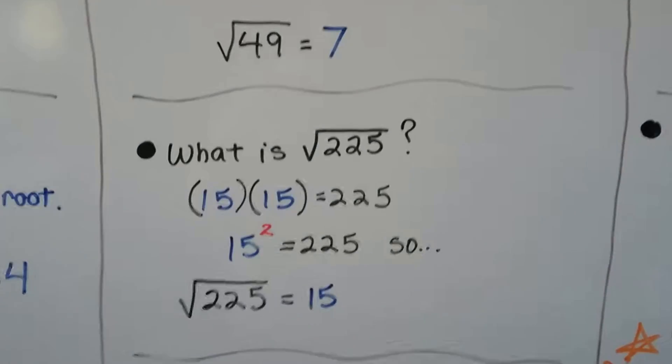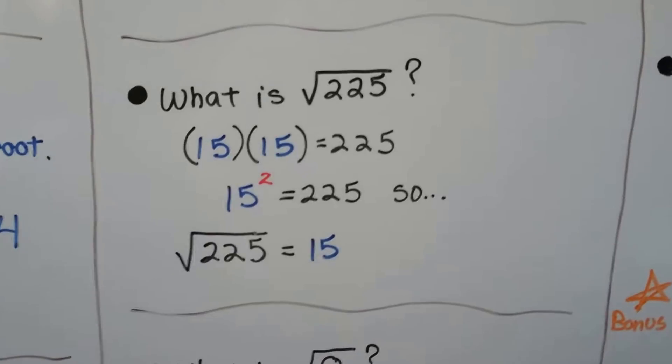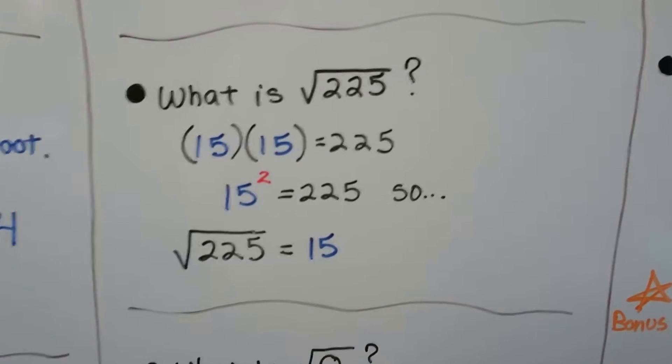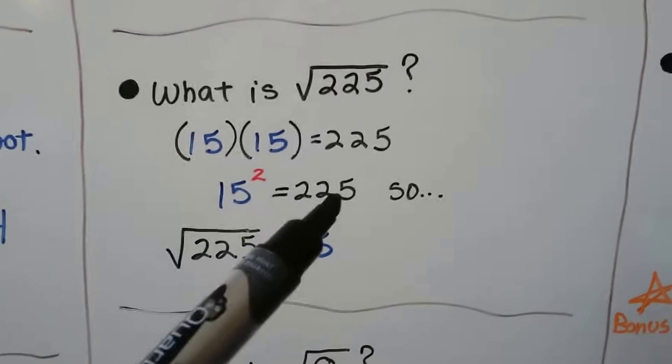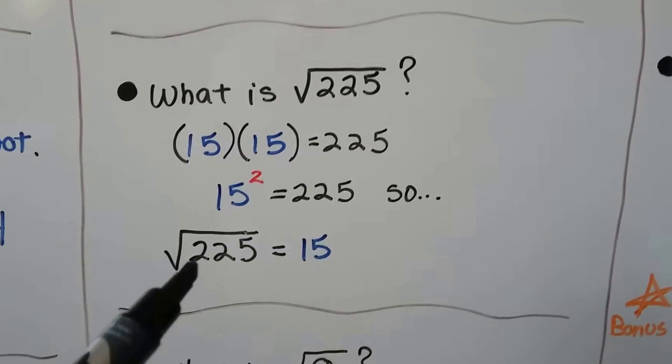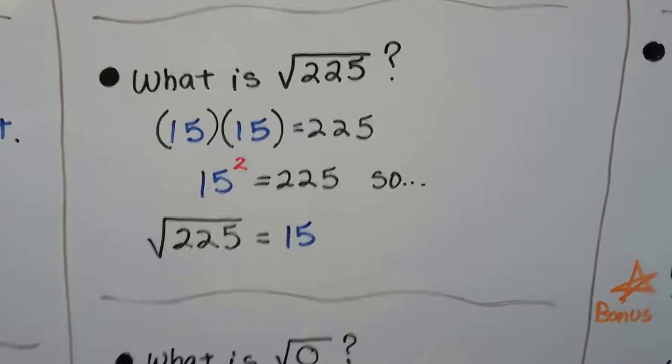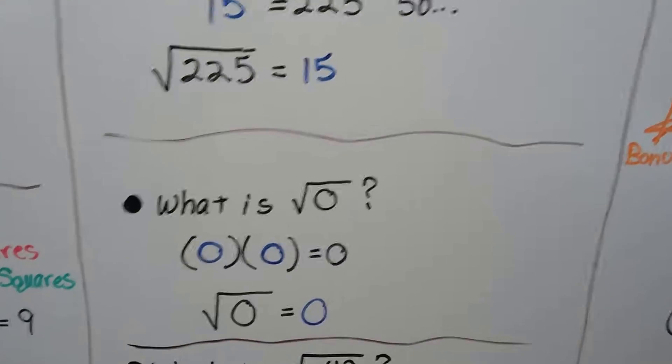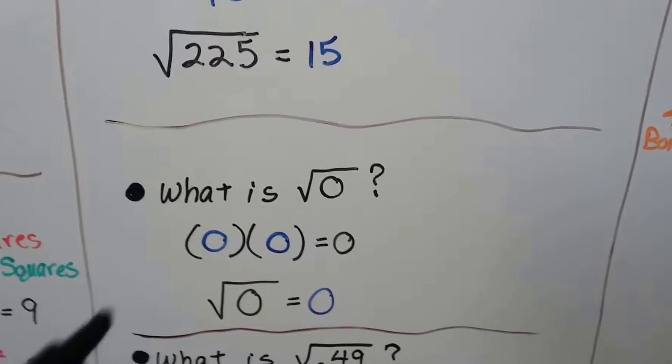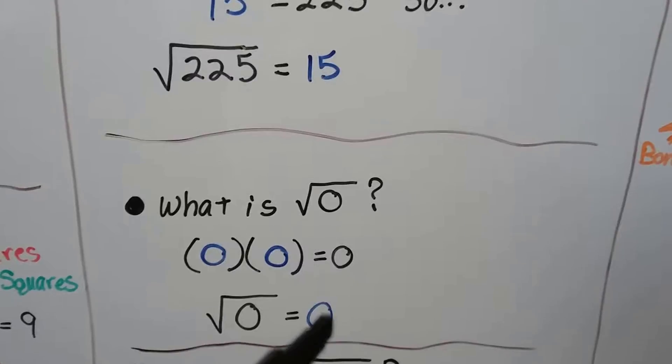What's the square root of 225? Well, 15 times 15 equals 225. 15 squared equals 225. So, the square root of 225 is 15. We just need one of them. What's the square root of 0? Well, 0 times 0 equals 0. So, the square root of 0 is 0.